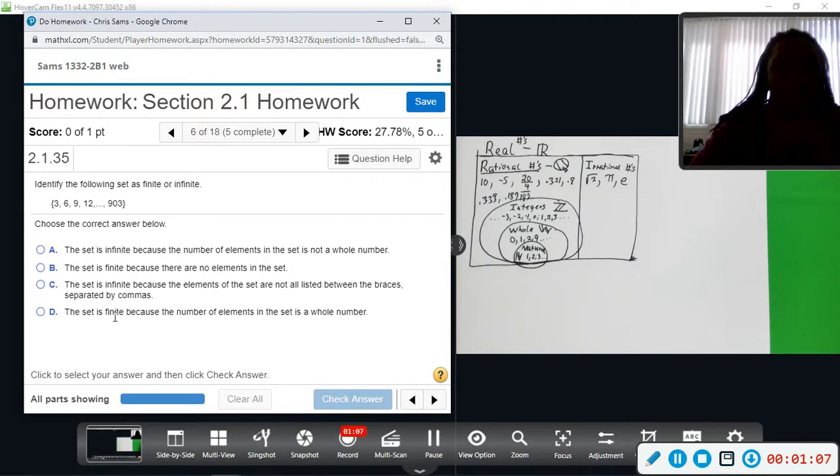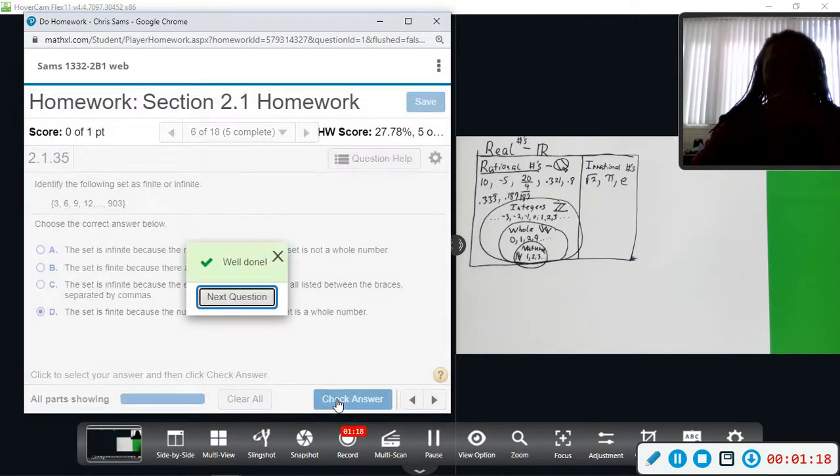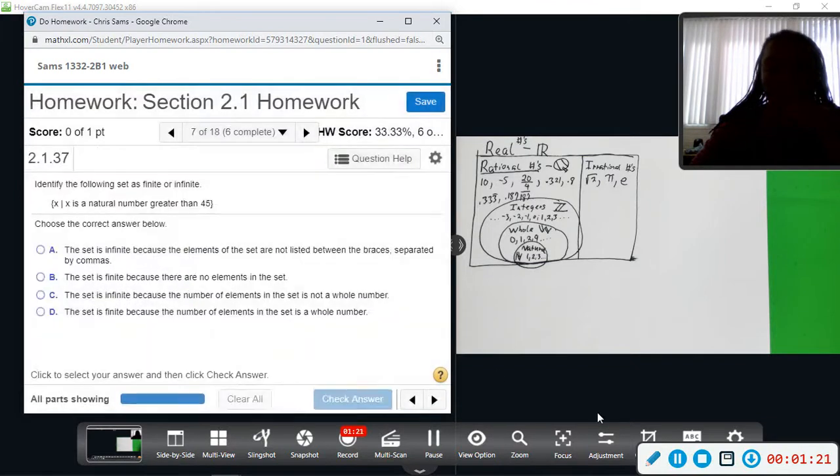And then D says the set is finite because the number of elements in the set is a whole number. So yes, that would be something that we can count to, a whole number.